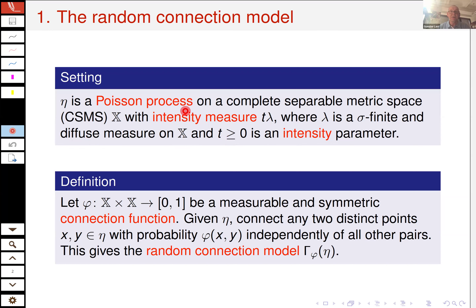The scalar factor T in front of lambda is some sort of intensity parameter which is later varied. Please interrupt me whenever you have a question or whenever I should explain something in more detail. A Poisson process, in the first place, is a point process — it puts a random number of points into sets. Fixing a set, the number of points is Poisson distributed where the parameter is given by the intensity measure evaluated at the set, and counts in disjoint regions are independent.